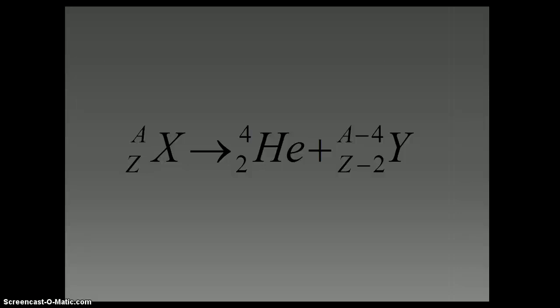then we would get a helium nucleus, obviously, and then you'd get another element, which you would take the mass number of your original element, subtract 4 from that, and the atomic number of your original element, subtract 2 from that. Using your atomic number minus 2, you'd get the new element that is formed when x undergoes alpha decay.